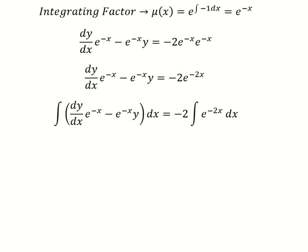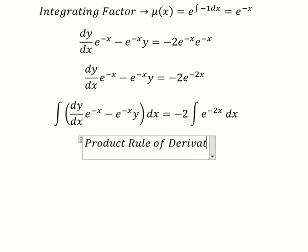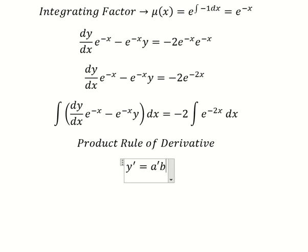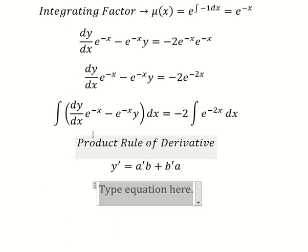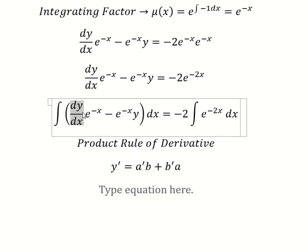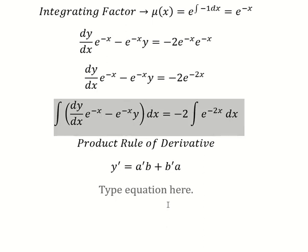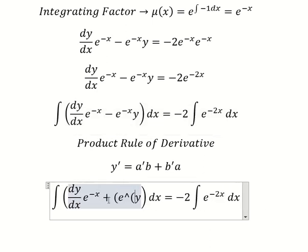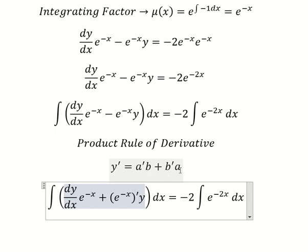We can apply the product rule of the derivative. We have the formula here. In this one we can see that we have the first derivative of a multiplied by b, and then we have the first derivative of b multiplied by a.